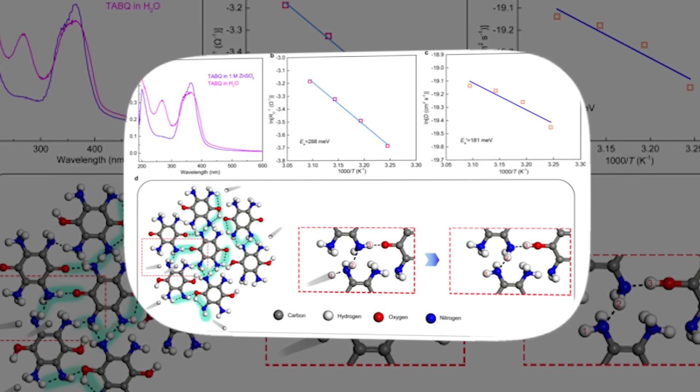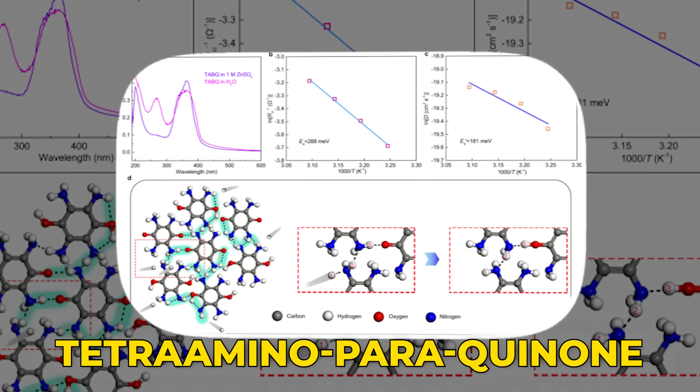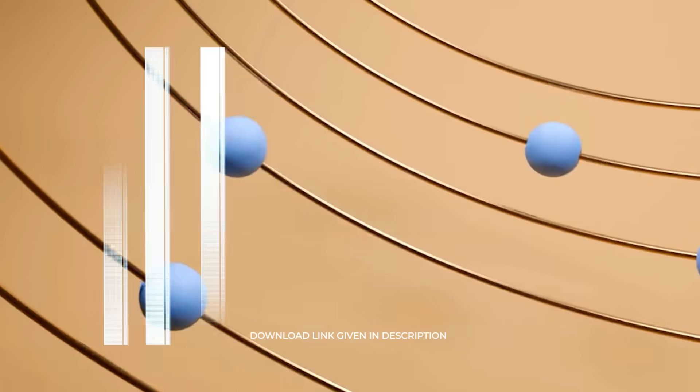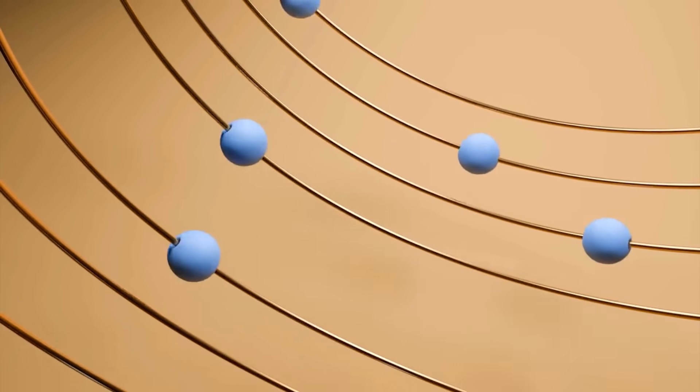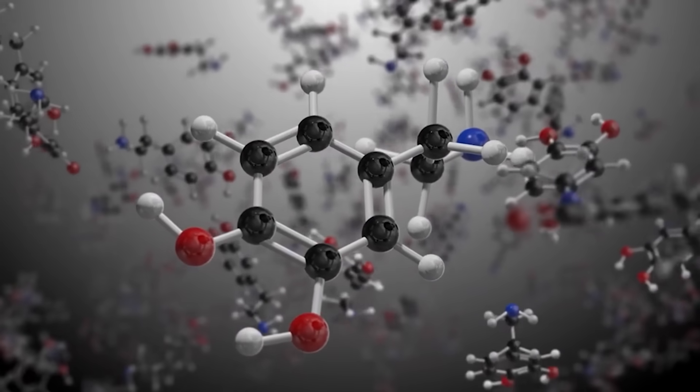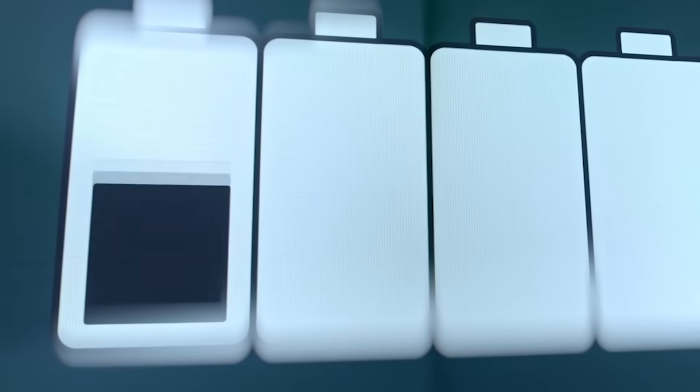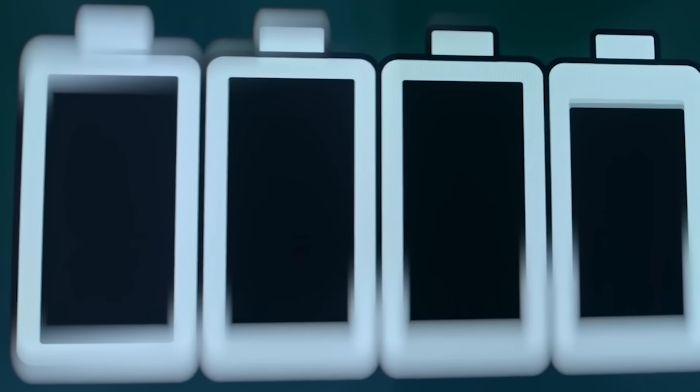Then came the major leap from the UNSW Sydney team. They developed a new organic, carbon-based material known as tetraminoparaquinone, or TAPQ for short. TAPQ is special because it allows protons to move quickly and store energy efficiently. Inside the battery, hydrogen bonds act as tiny bridges that help protons hop from site to site. This rapid movement allows for faster charging and better overall conductivity.